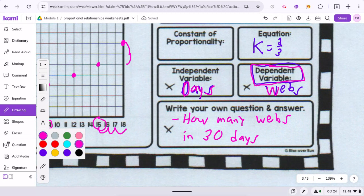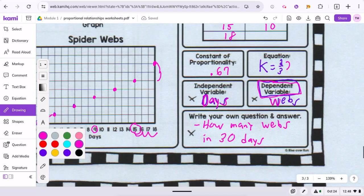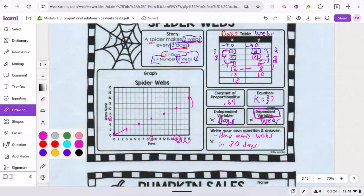So if you did the constant of proportionality, you would just basically need to do the two divided by three. You'd get about like 0.67. So the proportionality is about 0.67 webs per day.